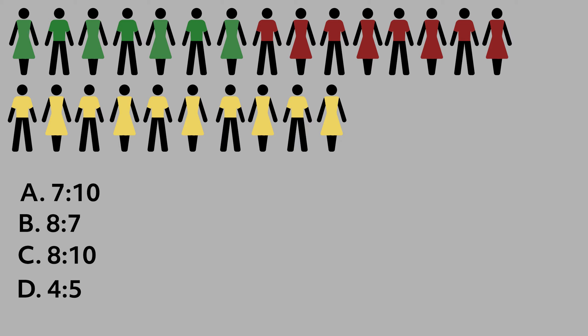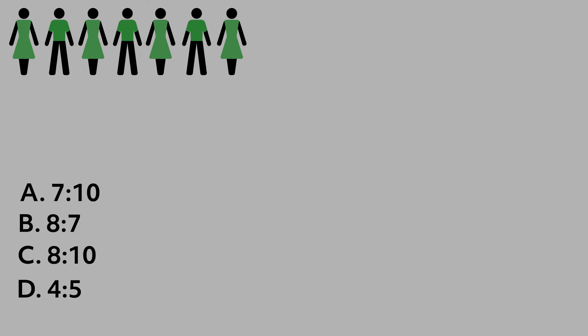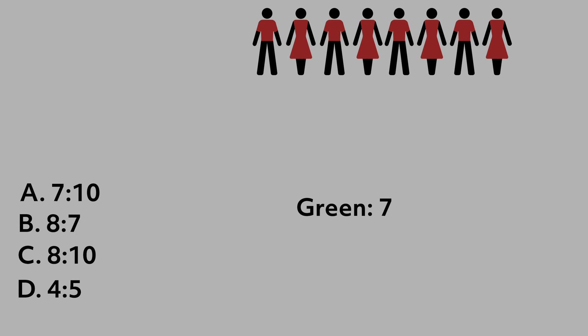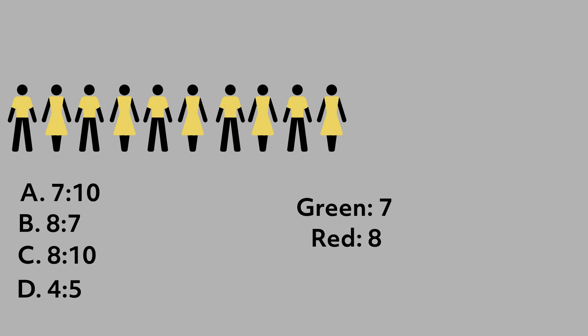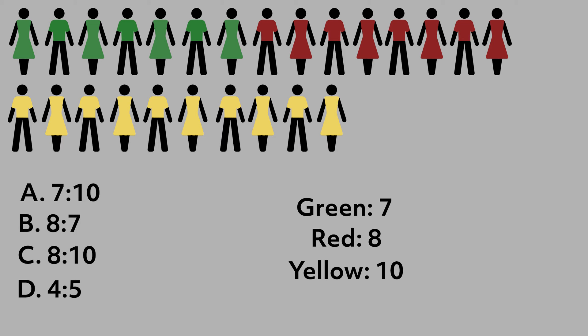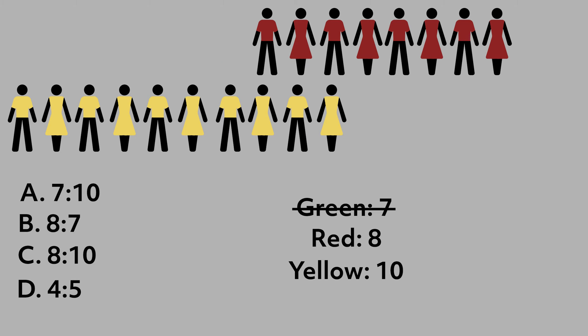Let's take a look at our problem and see what it's asking us to find, and write out the information that we've been given. There are seven kids with green shirts — green, seven. We have eight kids with red shirts — red, eight. And we have ten kids with yellow shirts — yellow, ten. The question is asking us to find the ratio of kids with red and yellow shirts, which means we don't even need to look at our number of green shirts. We are just looking for the ratio of red shirts to yellow shirts. We have eight red shirts and ten yellow shirts, which gives us a ratio of eight to ten.